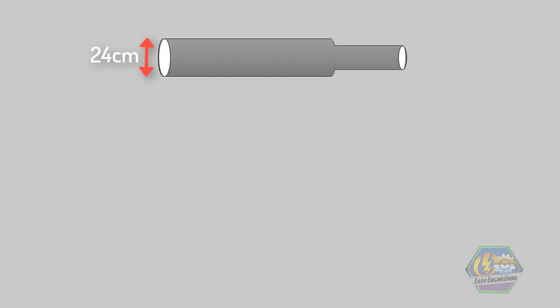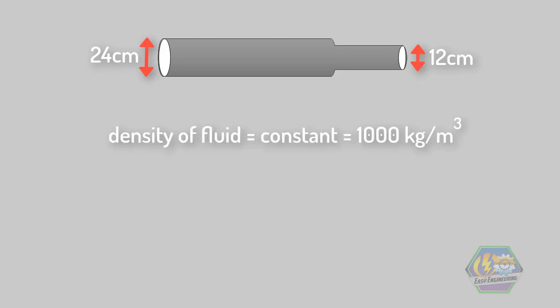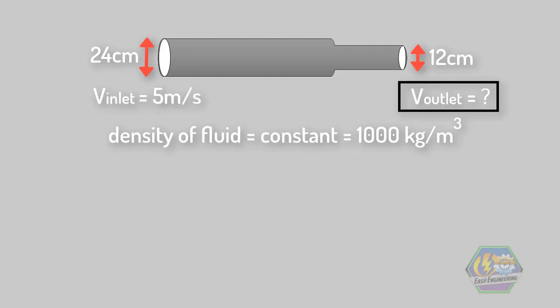Imagine a converging pipe where you have a 24-centimeter diameter on one end and 12 centimeters on the other. The density of the fluid is constant at 1000 kilograms per cubic meter. What is the velocity of the fluid at the outlet if the velocity at the inlet is 5 meters per second?